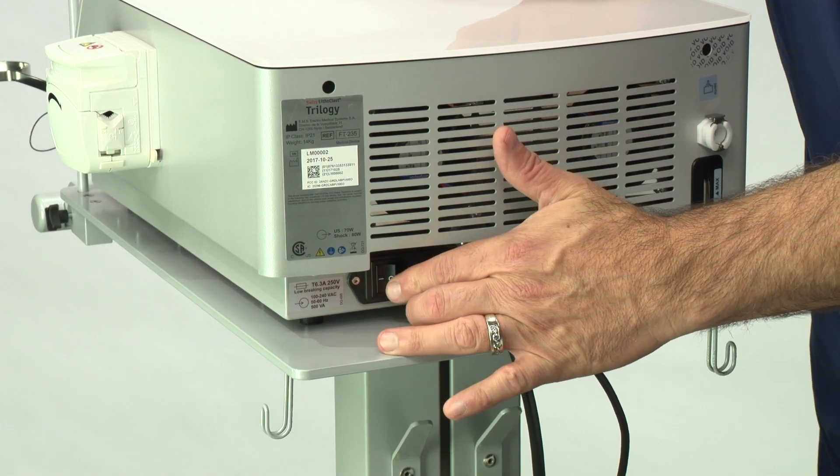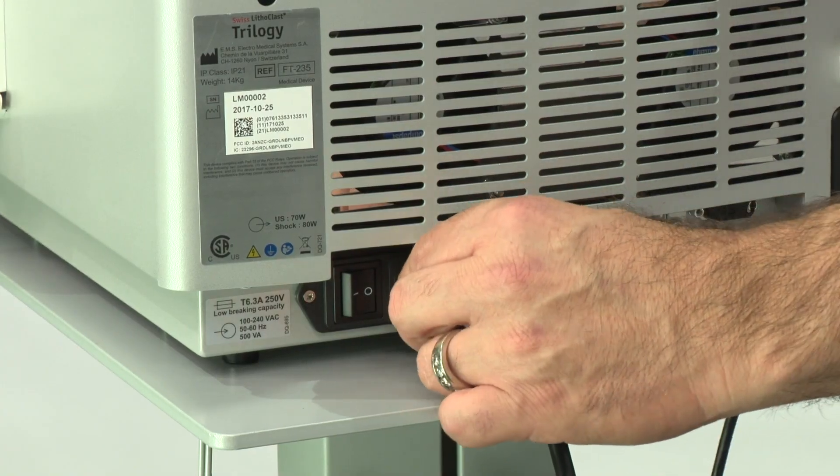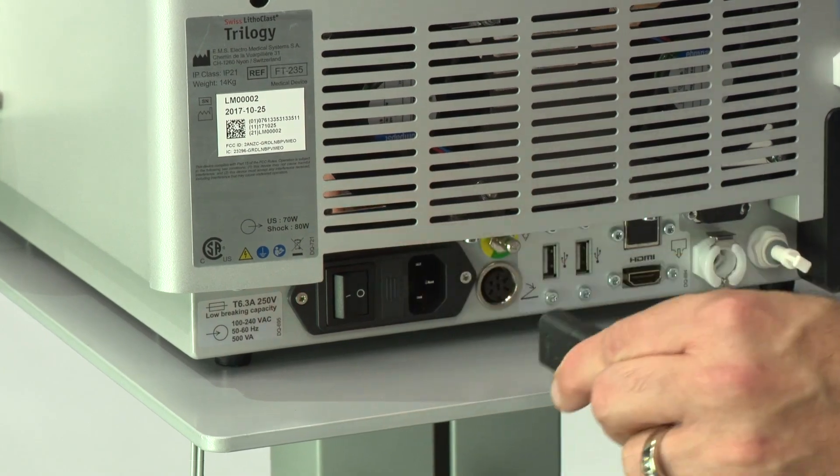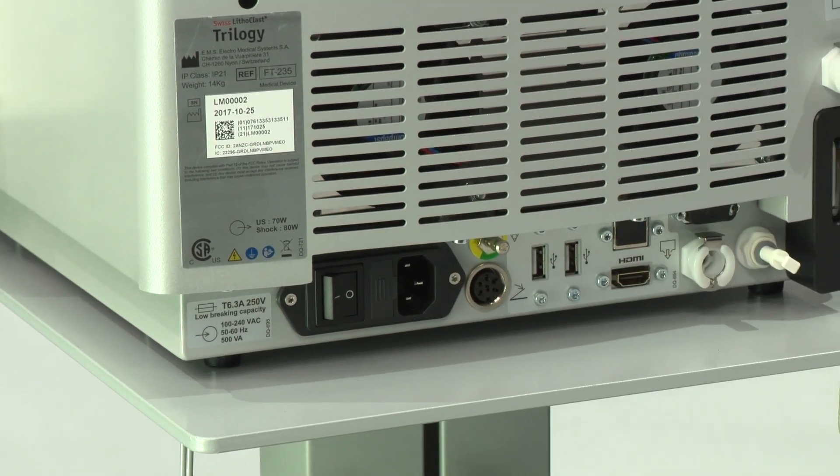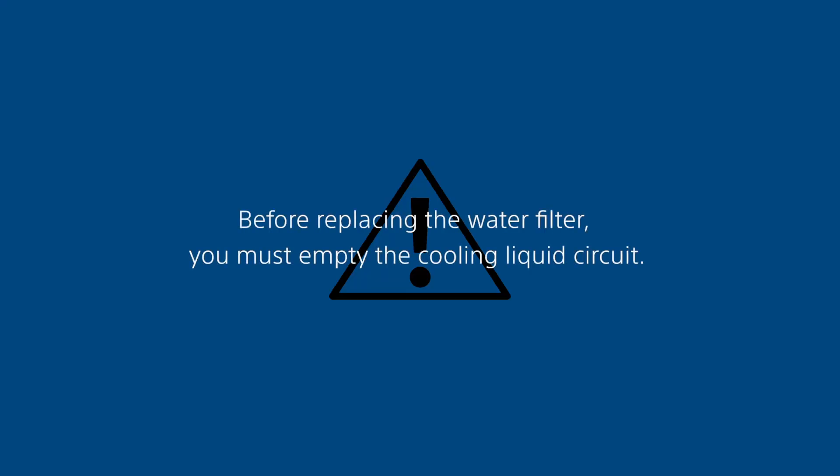For all maintenance operations, ensure that the unit is switched off and that the power cord at the rear of the unit is disconnected. The cooling liquid and the water filter should be replaced every year.